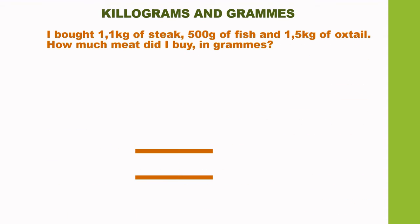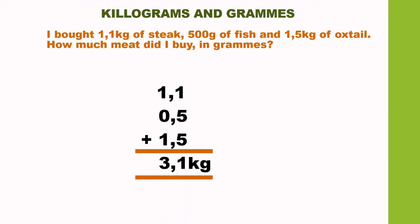I bought 1.1 kg of steak, 500 grams of fish, and 1.5 kg of oxtail. How much meat did I buy in grams? We are going to add the three quantities, and the answer we get is 3.1 kg.